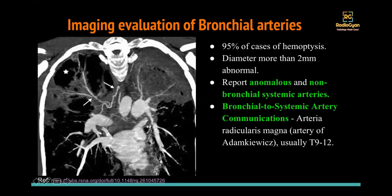Another important thing to report is whether there are any bronchial-to-systemic artery communications. Does anybody know why this is important from a management perspective? If the bronchial artery communicates with systemic vessels, when they embolize, some of the embolizing material can go into the anterior spinal artery and cause infarction — that is known as non-targeted embolization. That's an important point. They talk about the artery of Adamkiewicz, which usually arises from T9 to T12 and supplies spinal flow, but we may or may not be able to see that.